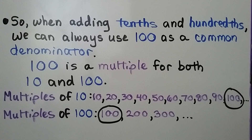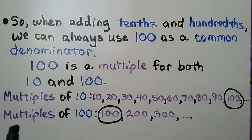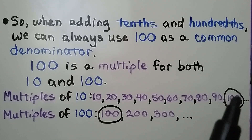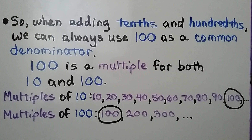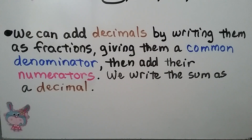When adding tenths and hundredths, we can always use 100 as a common denominator. 100 is a multiple for both 10 and 100. If we list the multiples of 10 and the multiples of 100, we see that 100 is a multiple of both of them. We can add decimals by writing them as fractions, giving them a common denominator, then adding their numerators. We write the sum as a decimal.